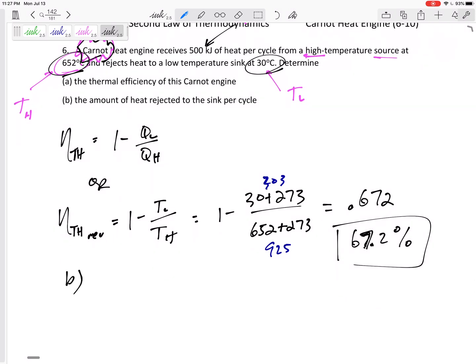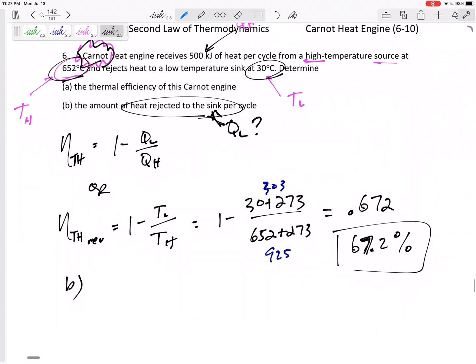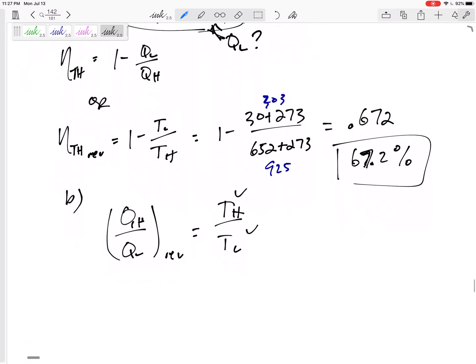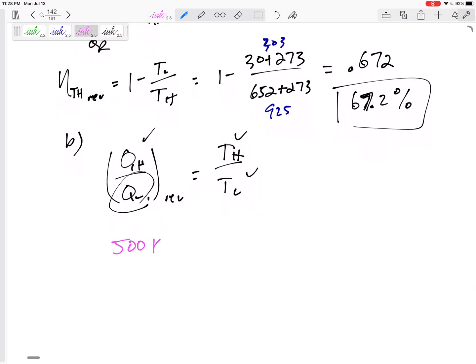Now part B: what is the amount of heat rejected to the low temperature sink QL? I know QH and need QL. I know that QH over QL of a reversible is equal to TH over TL, and I have all three of these. I can find the QL. So QH is 500 kilojoules, QL I don't know, TH is 652 plus 273, make sure it is absolute, 30 plus 273. I would get QL of 164 kilojoules.